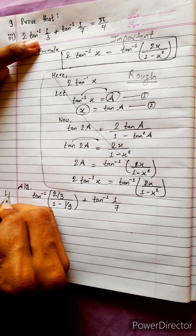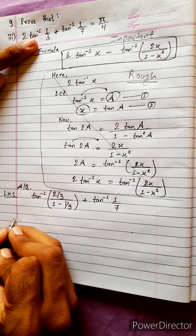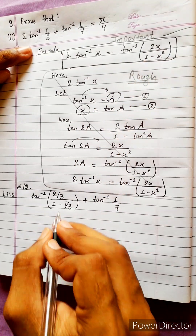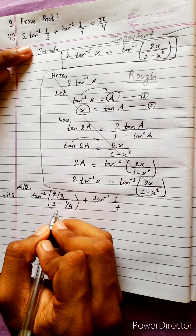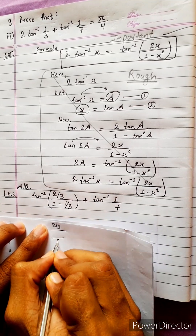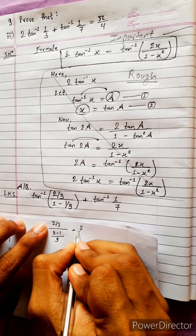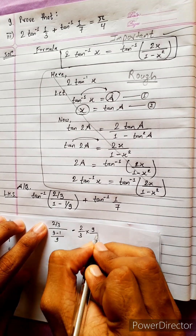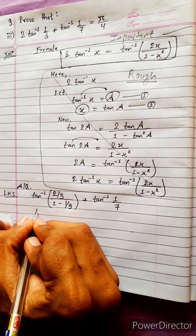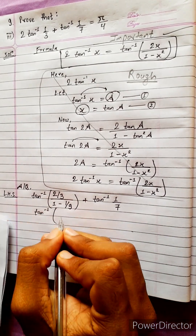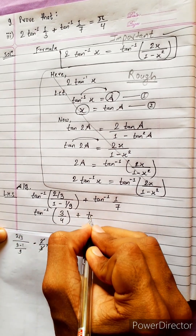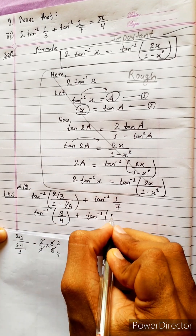This is the LHS. Left hand side: solve the problem. This is tan⁻¹(1/3). Now tan⁻¹(1/4) plus tan⁻¹(1/7).